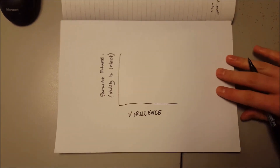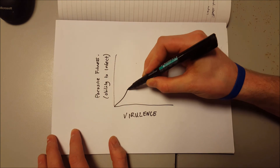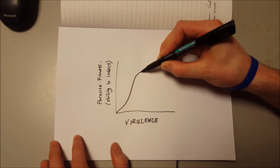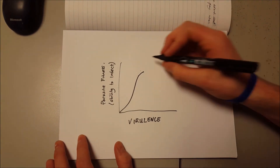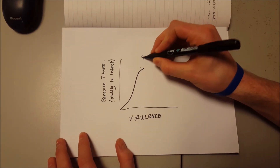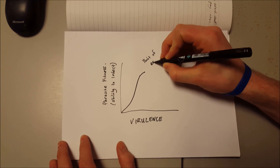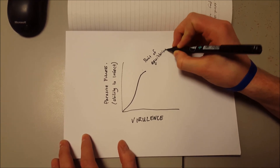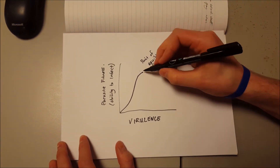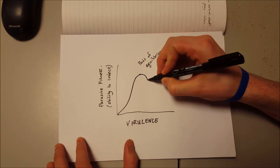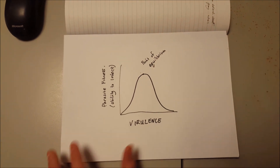As you can see, as virulence increases, so does parasite fitness, up until this point of equilibrium, after which any increase in virulence of the pathogen results in decreased fitness due to an increased rate of host death under parasitic strain.